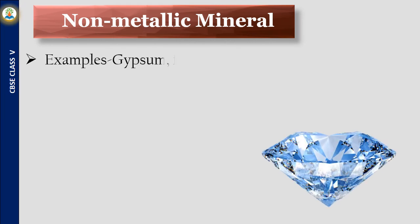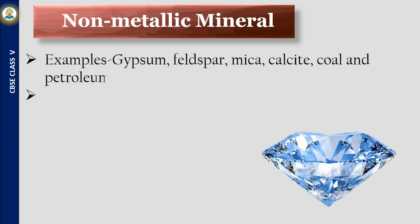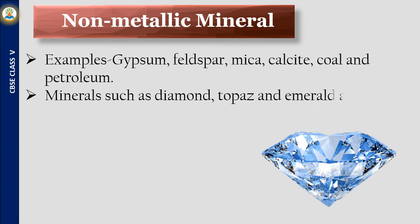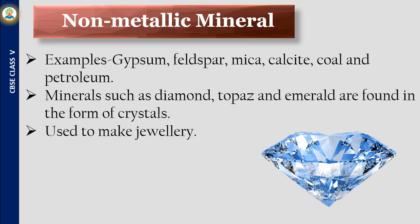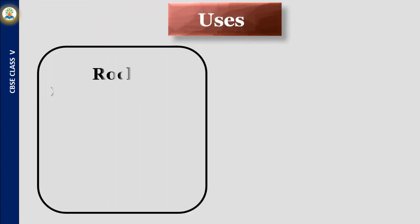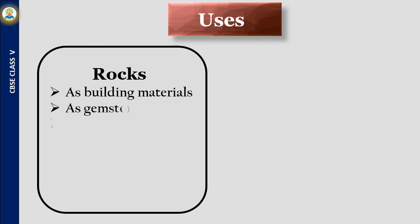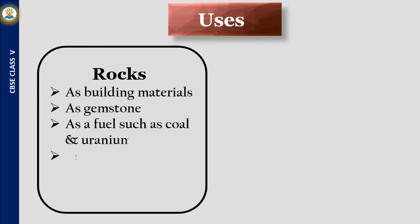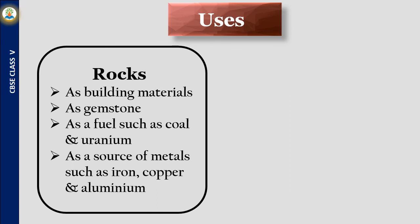Examples of non-metallic minerals are gypsum, feldspar, mica, calcite, coal, and petroleum. Minerals such as diamond, topaz, and emerald are found in the form of crystals and are used to make jewelry. Rocks are used as building materials, as gemstones, as fuel such as coal and uranium, and as a source of metals such as iron, copper, and aluminum.